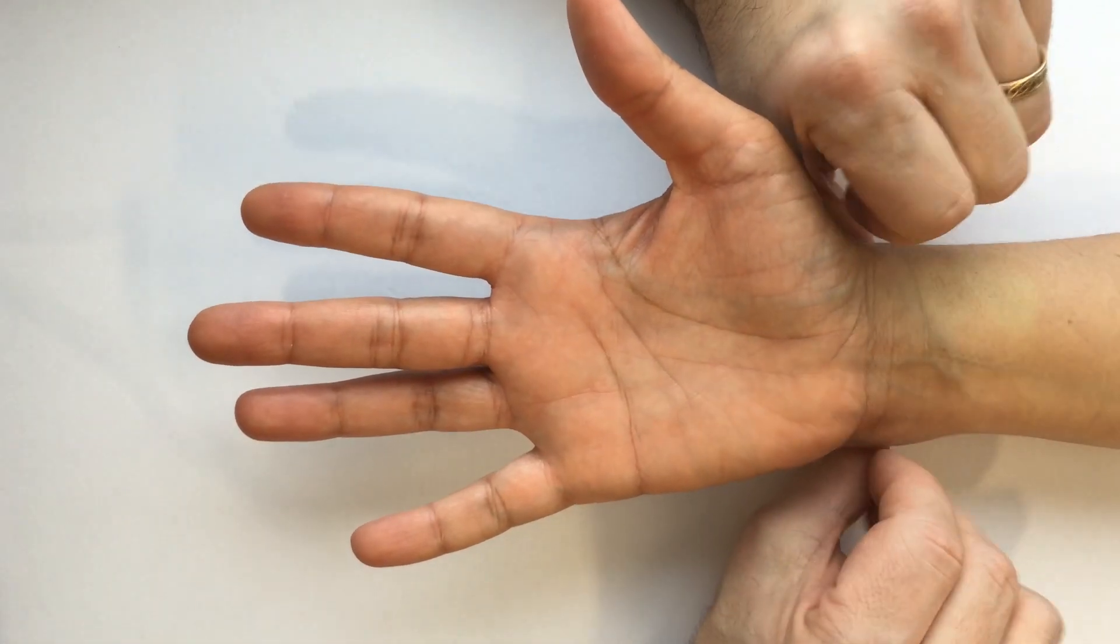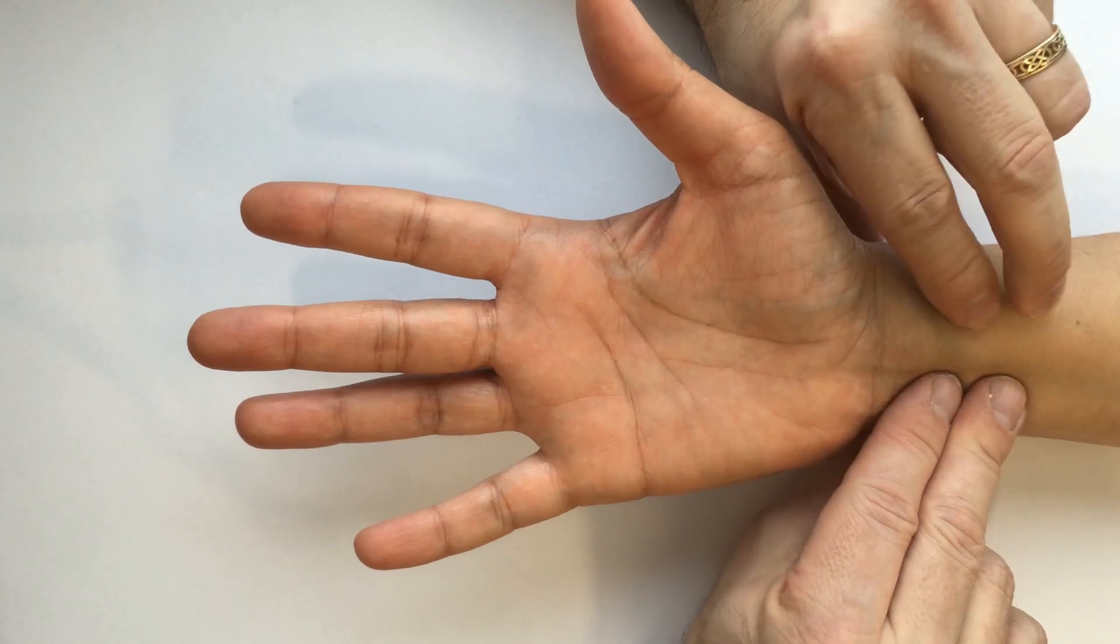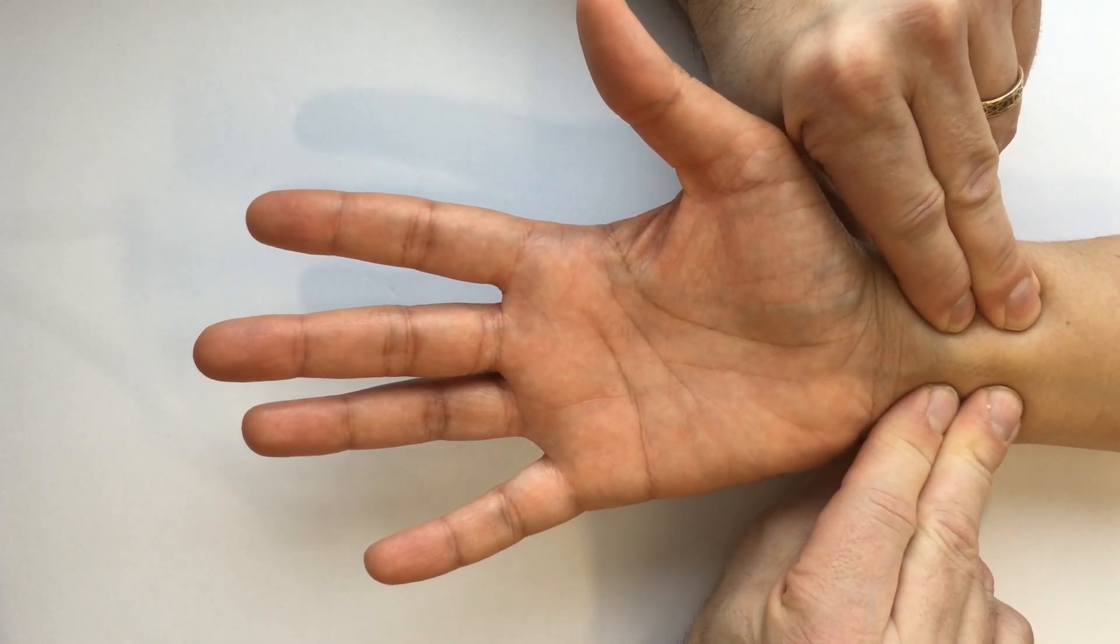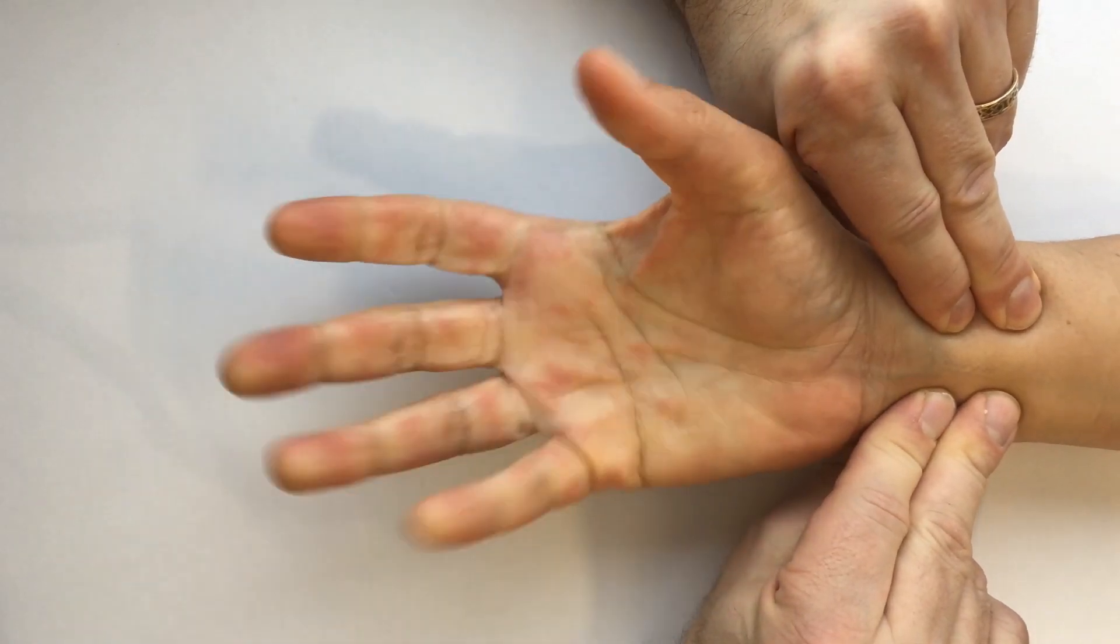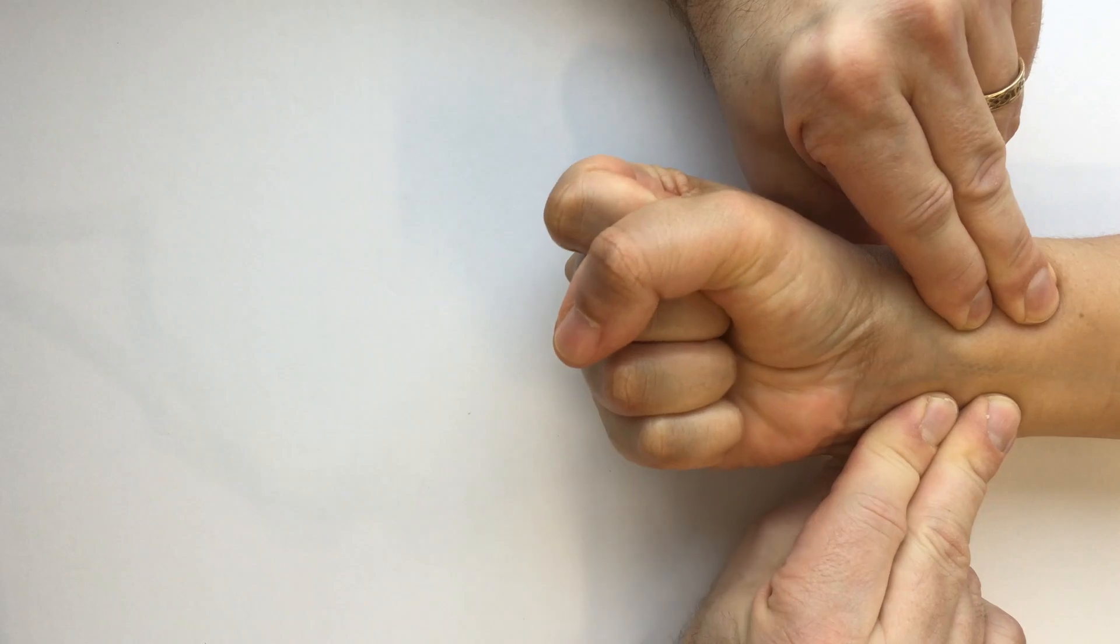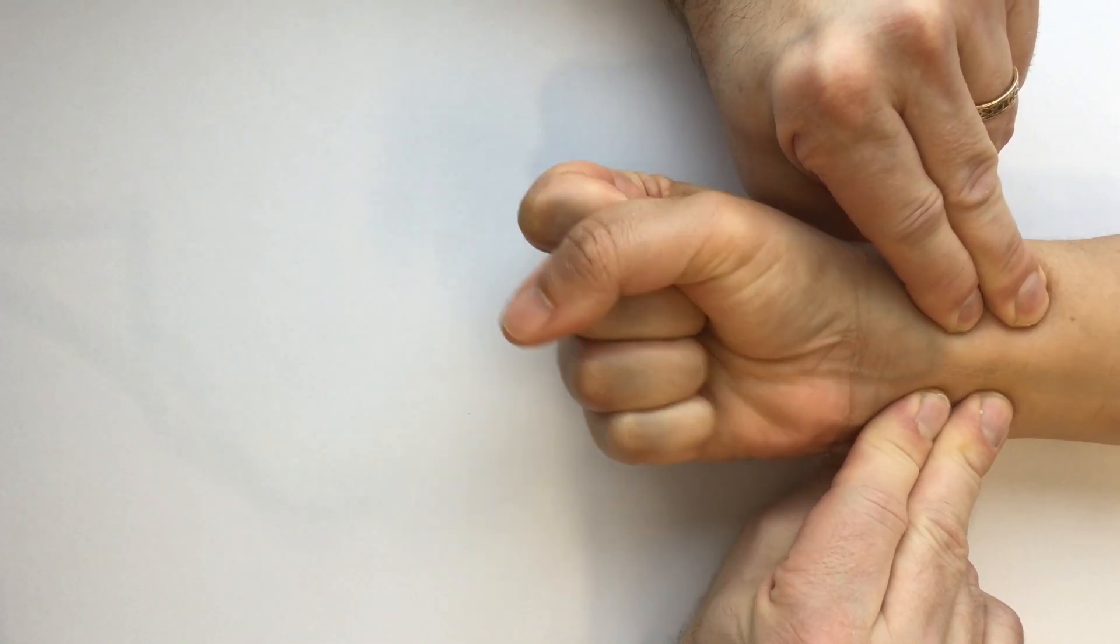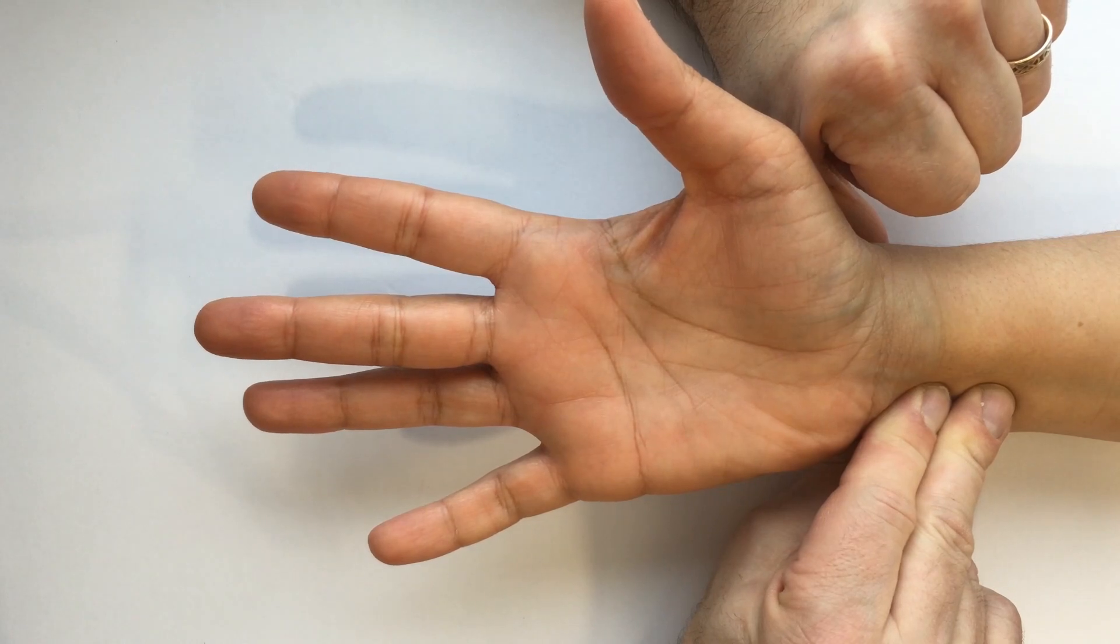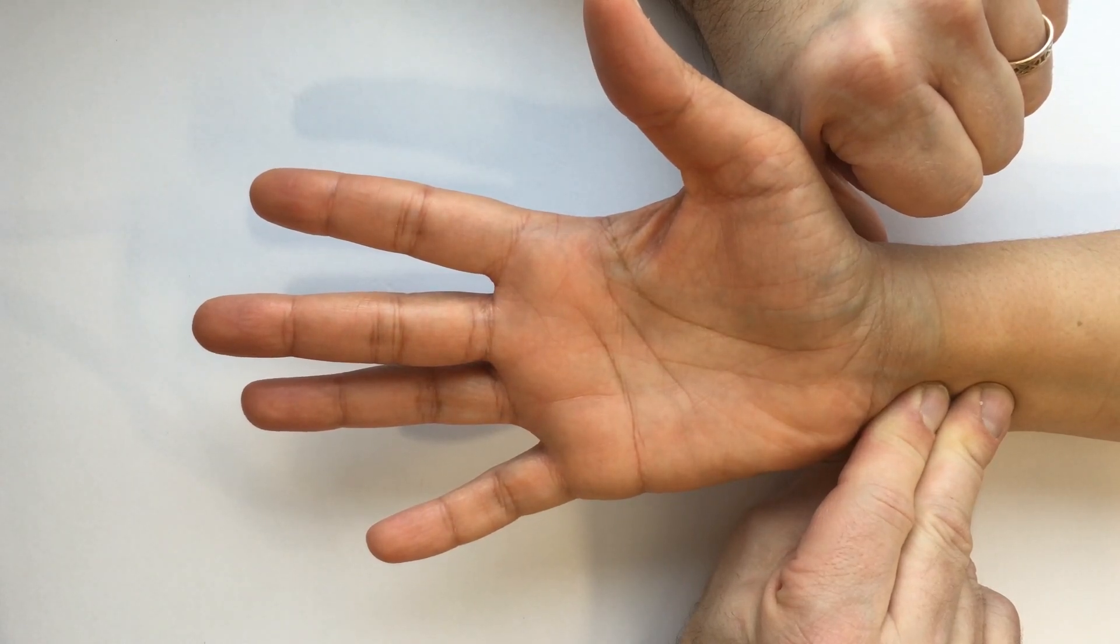Once you've done that, repeat the test, this time releasing the other artery. So go ahead and make about four more fists. Then I release the radial artery and we see how long it takes for the color to return to normal.